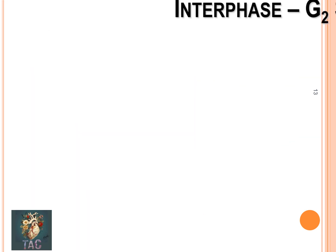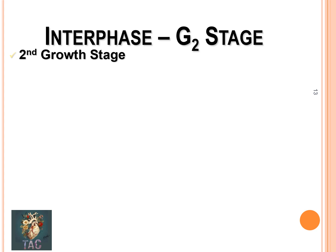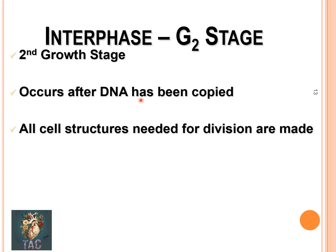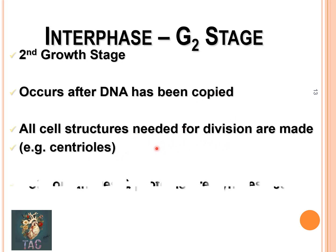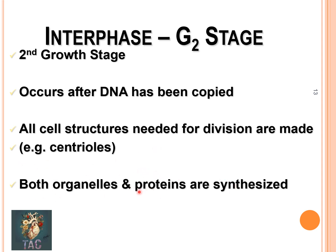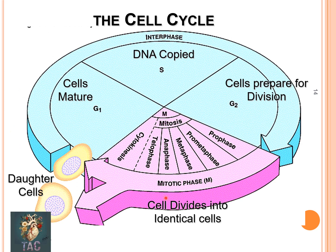In the second growth phase, G2, which occurs after the DNA has been copied, all the cell structures needed for cell division are made — centrioles, organelles, and proteins are synthesized. Then mitosis occurs, during which you can see prophase, prometaphase, metaphase, anaphase, and telophase, after which cytokinesis occurs and two daughter cells are formed.